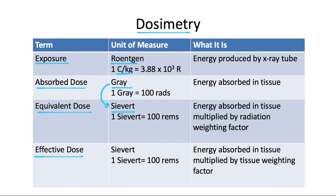All the different tissue weighting factors for the different body parts add up together to equal one. So: exposure is what the x-ray tube gives off; absorbed dose is what you actually absorb; equivalent dose accounts for the type of radiation; and effective dose calculates the relative risk of that equivalent dose based on what body part is being exposed.